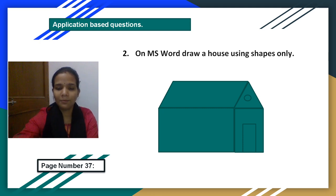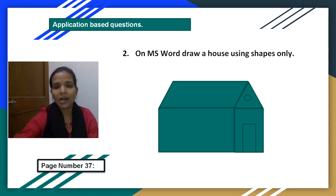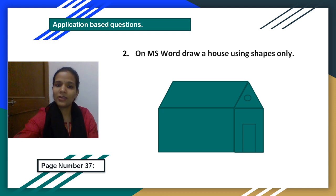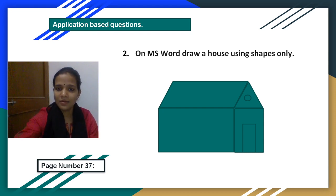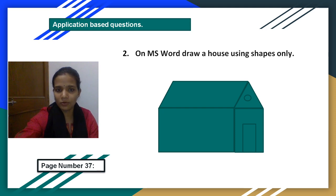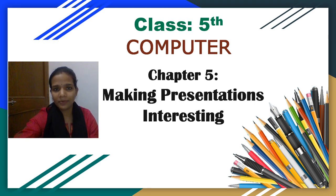Now students, we have completed all the exercise questions from chapter number 3. You have to write all the question answers in your fair computer copy. I will also give you a PDF of this chapter to help you write your answers. Learn all the question answers from chapter 3, as chapter 3 is included in your half-yearly exam. If you feel any difficulty, you can ask me in the comment section below the video.